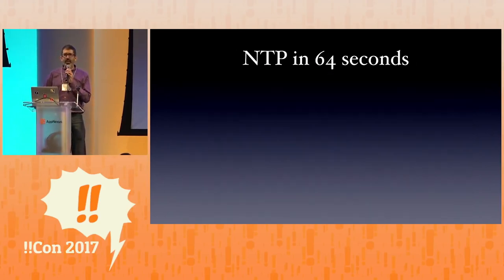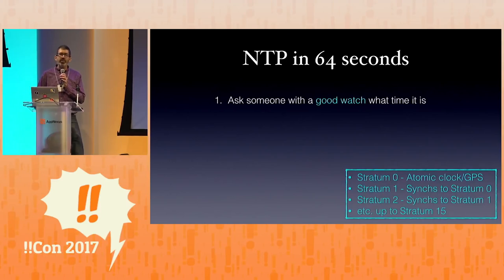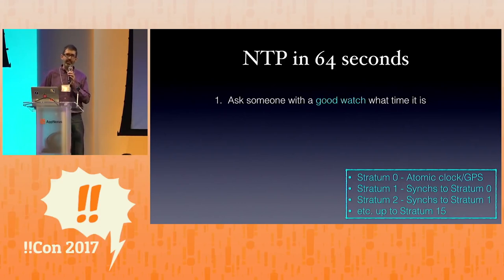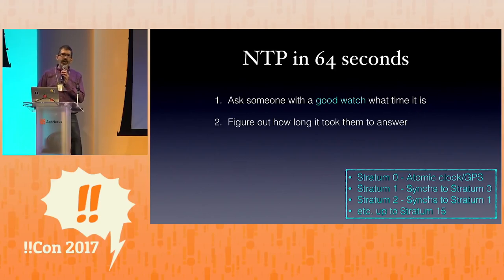NTP in 64 seconds — that isn't a joke. How does NTP work? Ask someone with a good watch what time it is. A good watch is going to be an atomic clock — that's considered a Stratum 0 NTP server, but you can't talk to a Stratum 0 server directly. You could talk to a Stratum 1 server, which synchronizes to that, or a Stratum 2, which synchronizes to Stratum 1, and so on up to Stratum 15. Try to get in touch with the best clock you can — typically you're going to be talking to a Stratum 1 or 2 server.